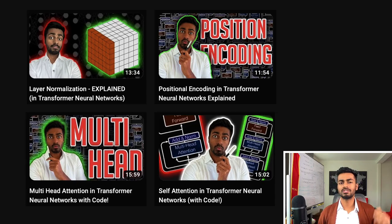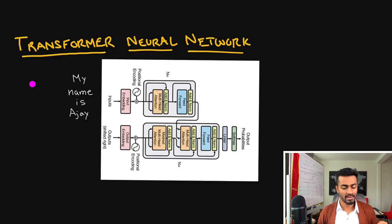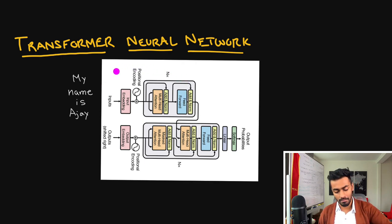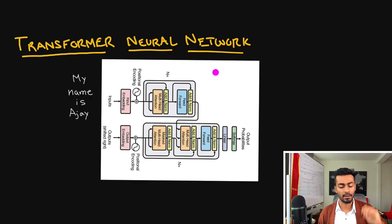In the last few videos we've constructed different components of the transformer neural network, outlining the logic in code as well as in theory. Now in this video I'm just going to talk about the encoder part of the architecture in its entirety, and basically walk through each and every component and how we go from start to finish of the encoder.